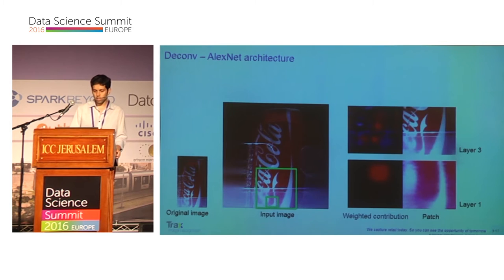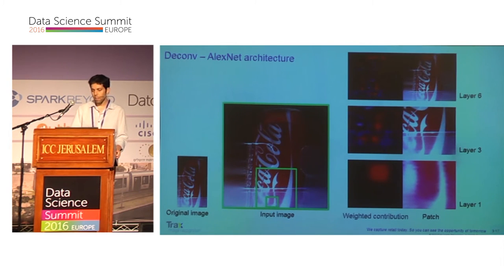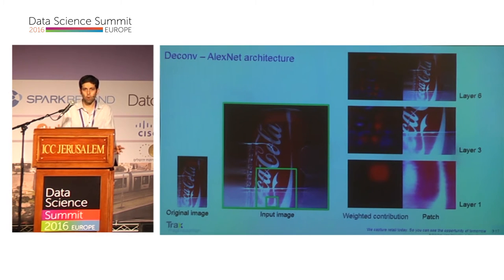Looking deeper in the network, we can see that at layer number six, the neuron managed to learn more complex structures like text.